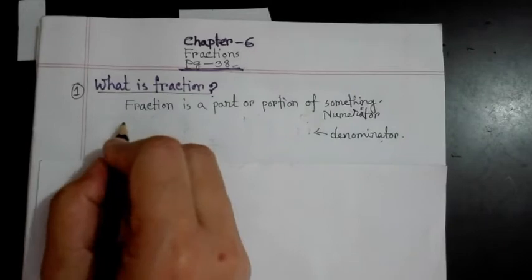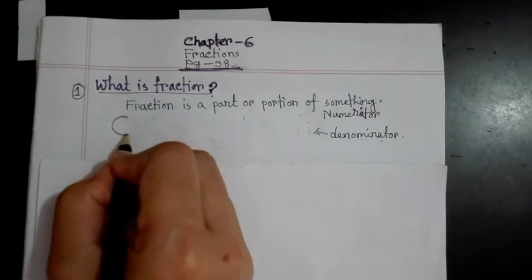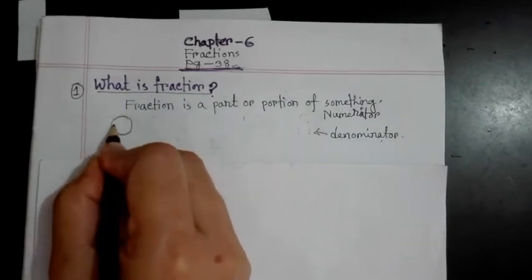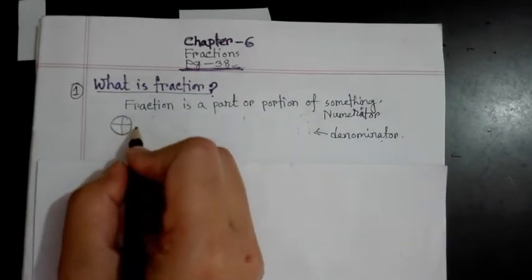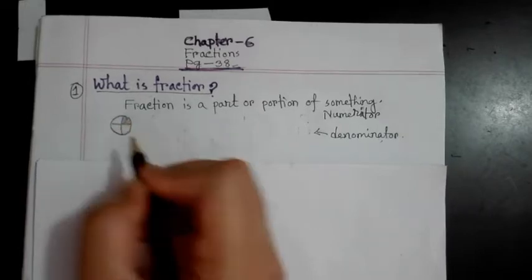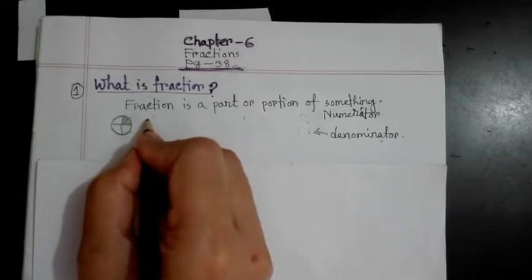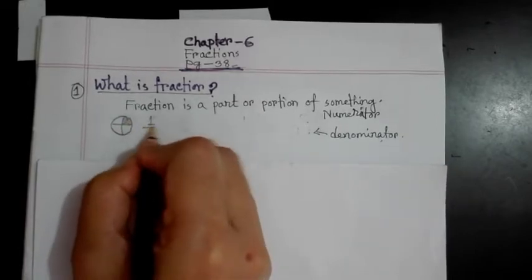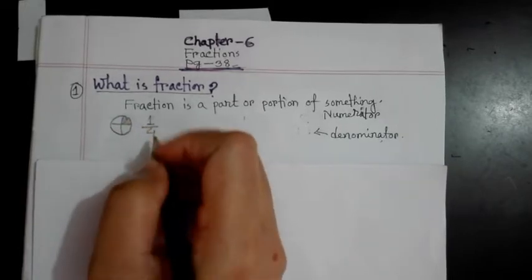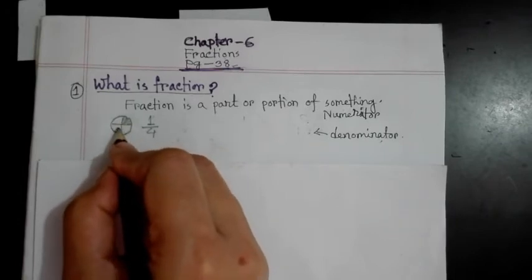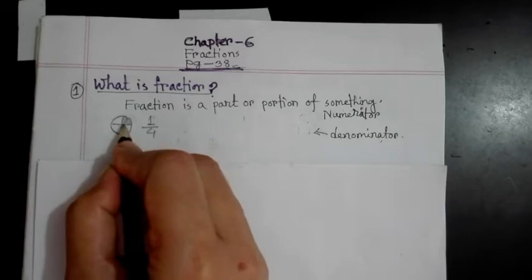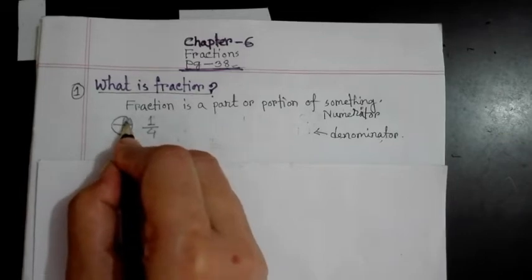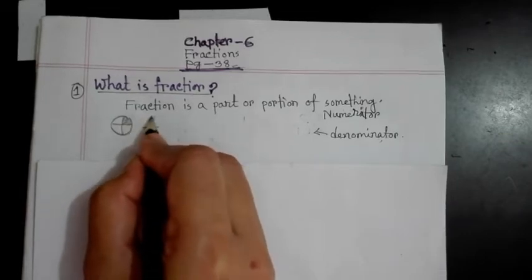You divide this orange into four parts, and you took one portion. That means one by four. You divide this orange into a total of four parts — this is four, the total portion — and you take one portion. This is one.